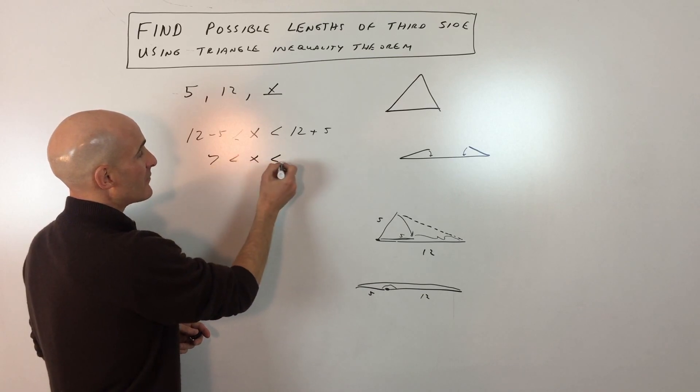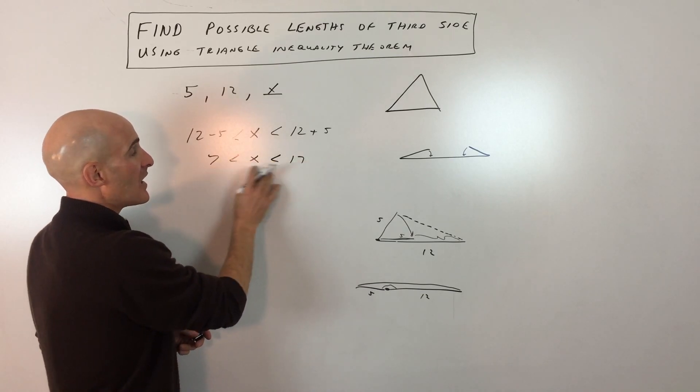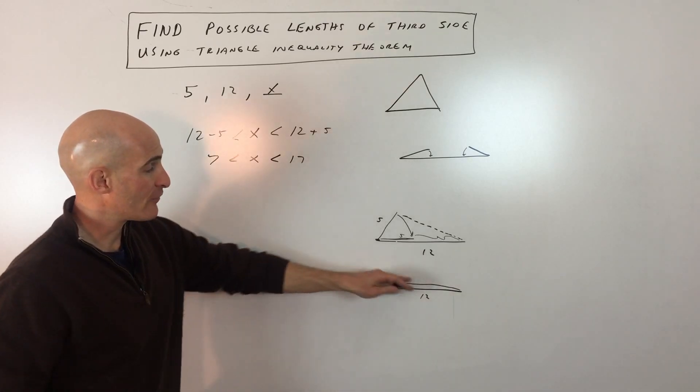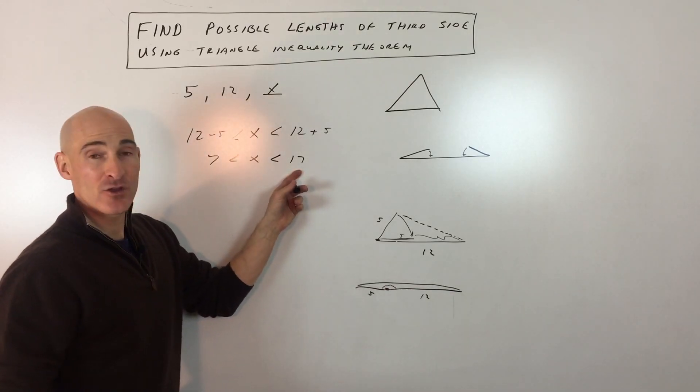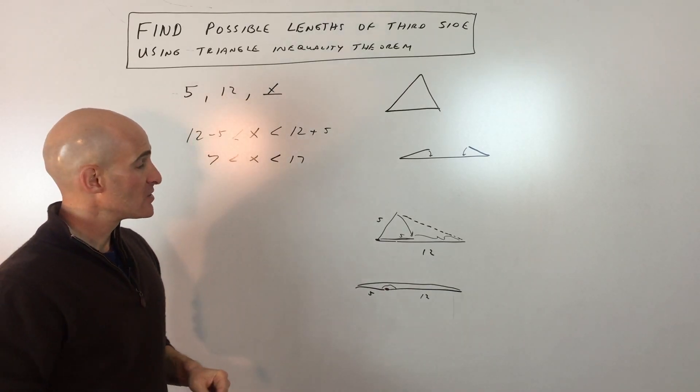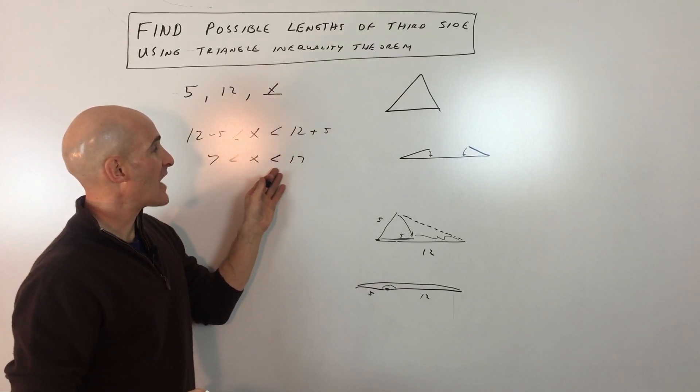So if we simplify, you can see x is greater than 7 and less than 17, not equal to, because otherwise then it's going to collapse down flat. So that's how you would use the triangle inequality theorem to solve for the possible lengths of the third side.